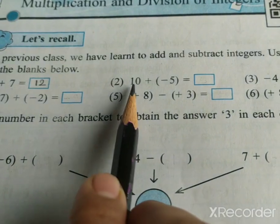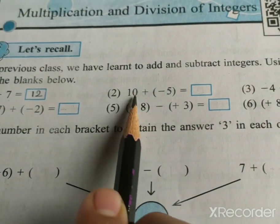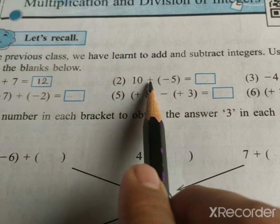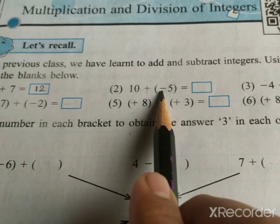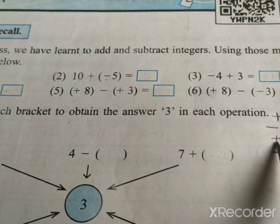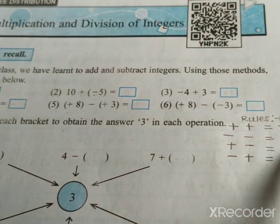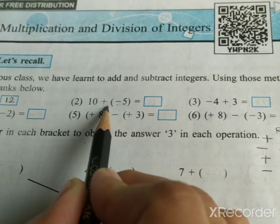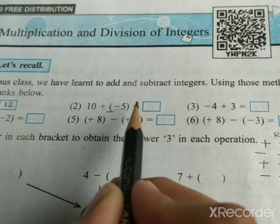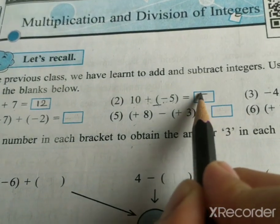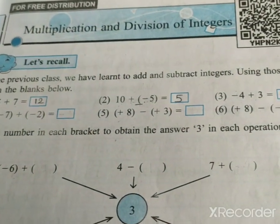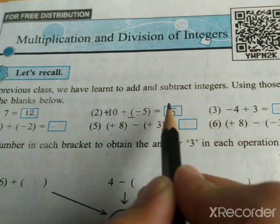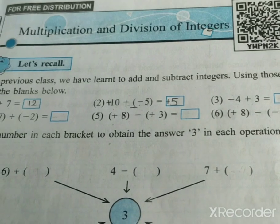Second example: 10 plus, in bracket, minus 5. There is a positive and a negative symbol here. Positive and negative makes negative, so plus and minus gives minus: 10 minus 5. We get the answer 5. The bigger number is 10, and the symbol of this number is positive. Therefore, the answer is plus 5.